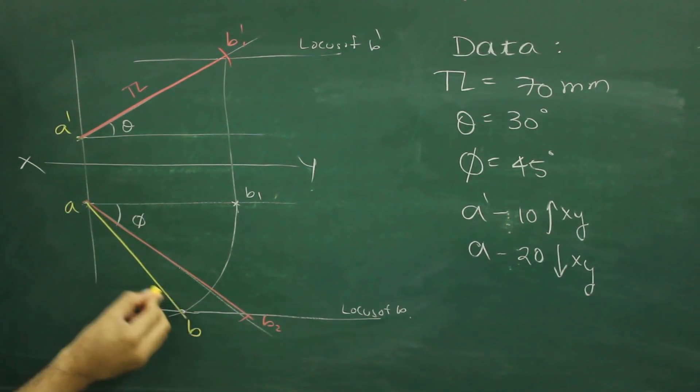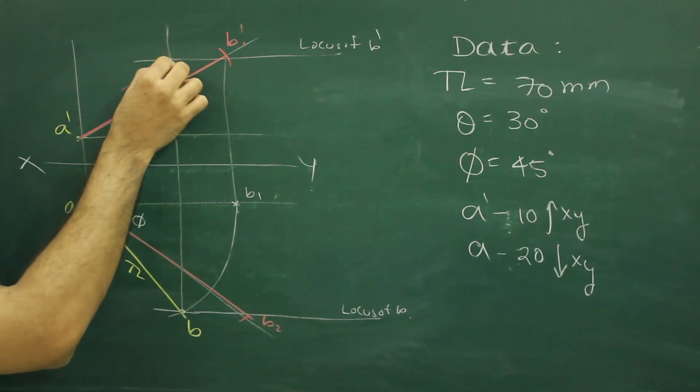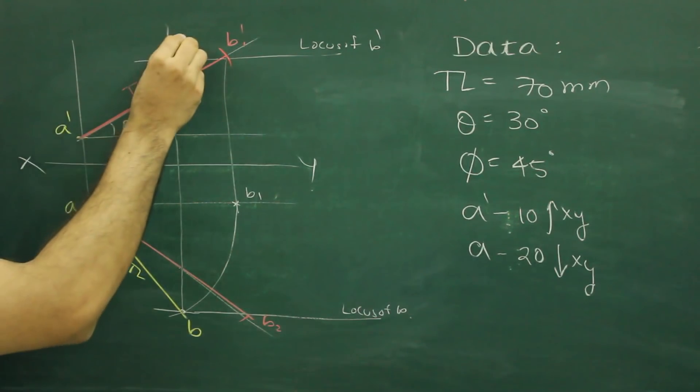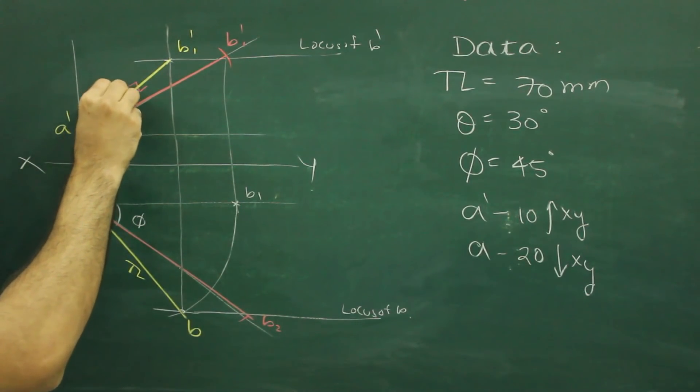So we got top view. Same way, we can project this point b straight up, wherever it will intersect with b dash, that point would be b1 dash and that would be front view.